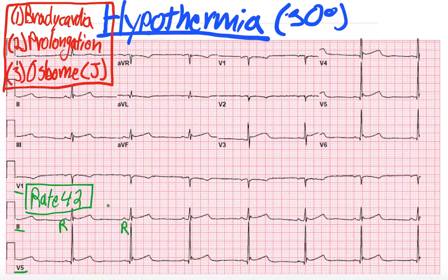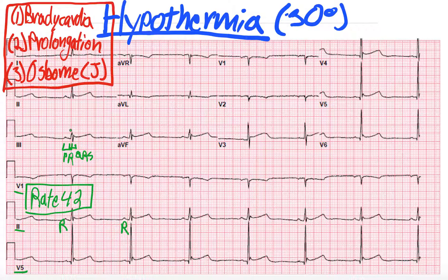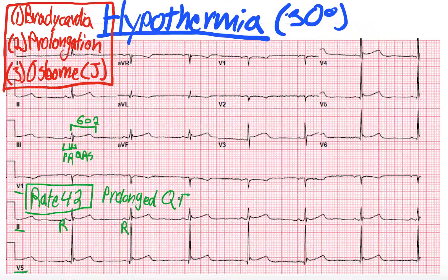The second thing we looked at was prolongation. We have PR, QRS, and QT. We have a 5-minute EKG video on calculating different intervals and segments — I'll link it in the top right corner if you have more questions. For the sake of this presentation, the PR interval is 174 milliseconds — normal. Our QRS is 96 milliseconds and normal. And then our QT, if you count the number of small boxes, it comes out to 602 milliseconds. So we have a prolonged QT, which is consistent with this patient's hypothermia.